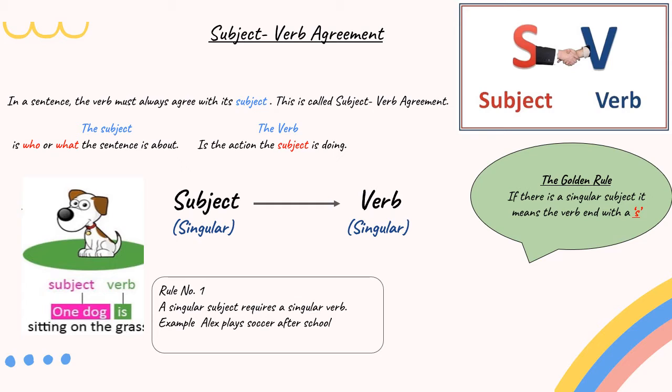In a sentence, the verb must always agree with its subject. This is called subject verb agreement. You might have questions as to what that is. The subject is who or what the sentence is about.